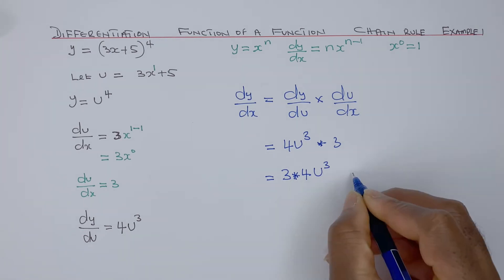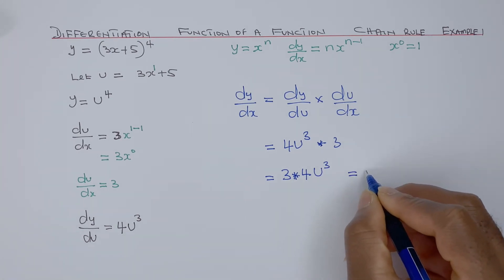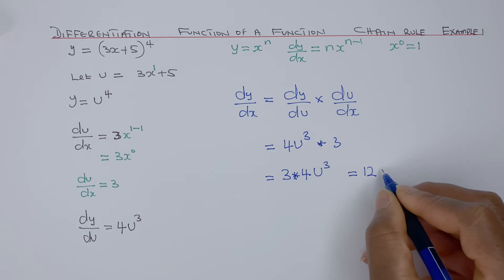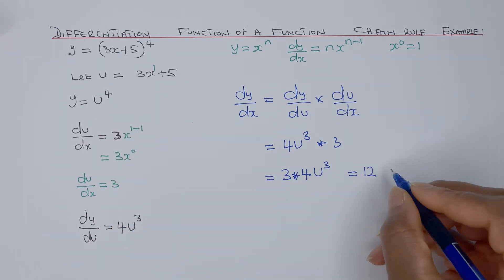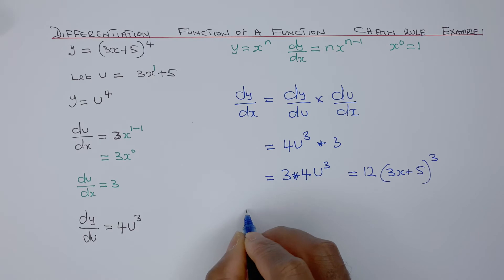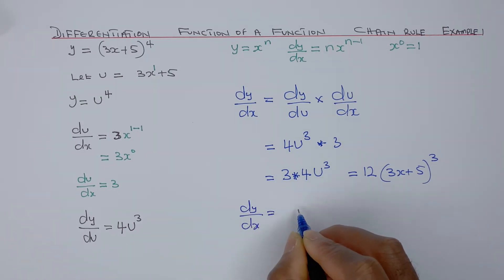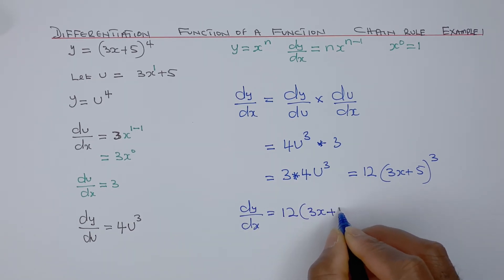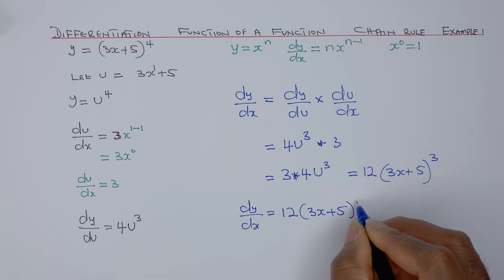We know what u is, so that would be 12. Now u is 3x plus 5, so that would be 3x plus 5 to power 3. Therefore dy/dx equals 12 times bracket 3x plus 5 to power 3.